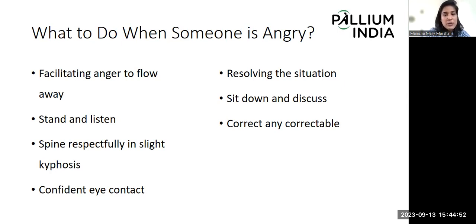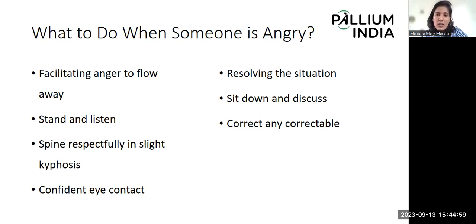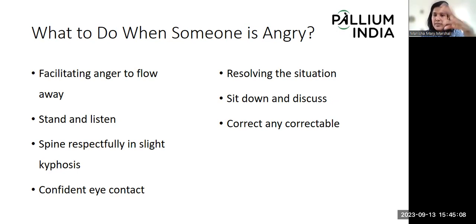We then spoke about collusion — the shielding of information from the patient — where we need to acknowledge the family's fears, work with the family, orient them about the benefits of communicating the bad news, and then take decisions appropriately. Finally, we spoke about dealing with emotions and especially anger.